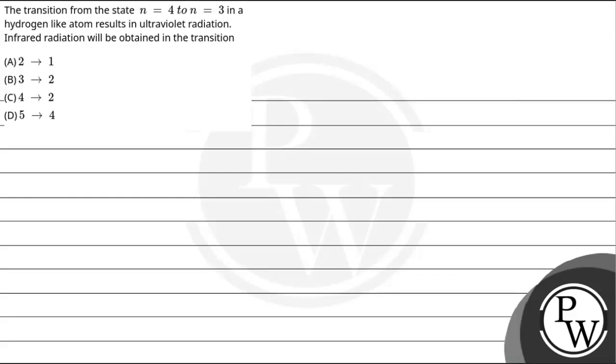Hello bachyo, let us read this question. The question says, the transition from the state n equal to 4 to n equal to 3 in a hydrogen like atom results in ultraviolet radiation. Infrared radiation will be obtained in the transition option A, 2 to 1, option B, 3 to 2, option C, 4 to 2, option D, 5 to 4.